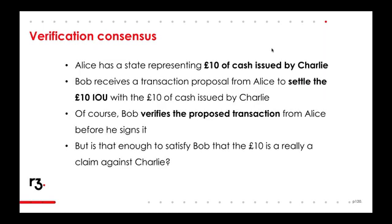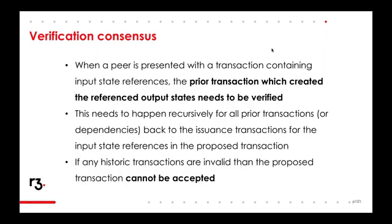So let's say Alice has some cash representing 10 pounds issued by Charlie. If Bob receives a transaction proposal from Alice to settle a 10-pound IOU with this cash issued by Charlie, Bob would not only verify the transaction Alice is proposing — he would actually have to verify some previous transactions involving the cash issued by Charlie. Without verifying those previous transactions, Bob wouldn't be able to completely ascertain whether the 10 pounds of cash, as an input state to Alice's proposed transaction, represents an actual claim on Charlie the issuer.